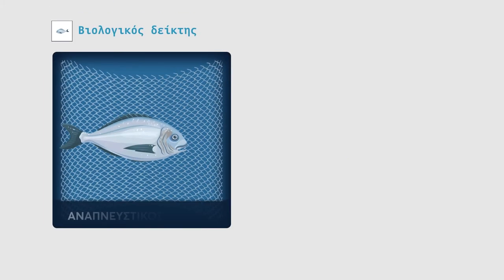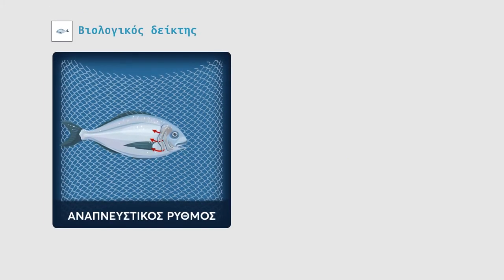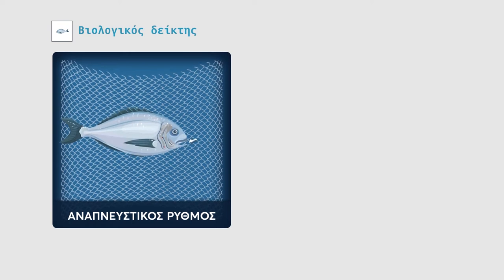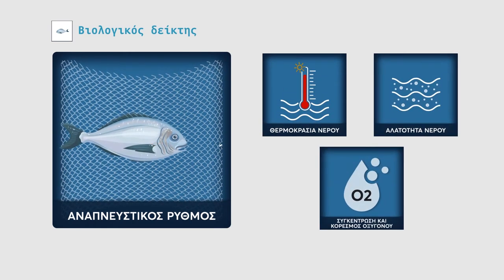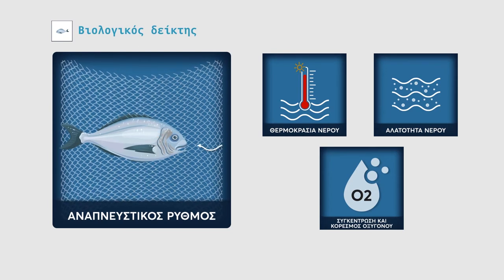The respiration rate is used as a simple observable indicator of stress in fish. It can record changes in environmental conditions such as temperature, salinity and available oxygen.